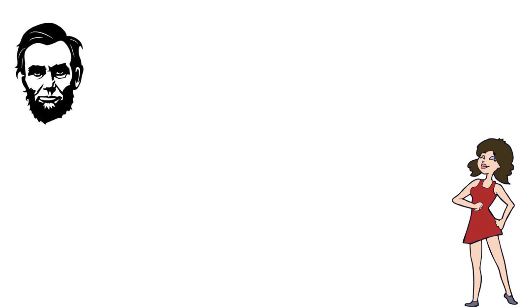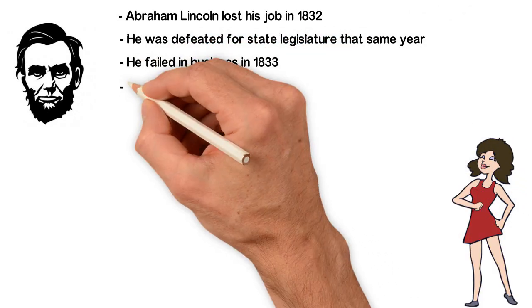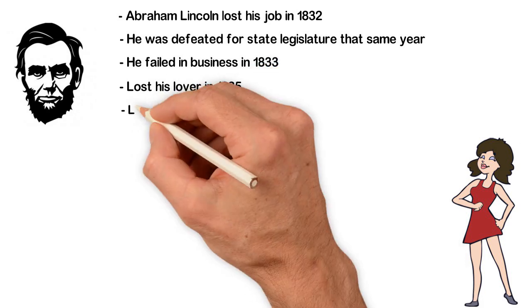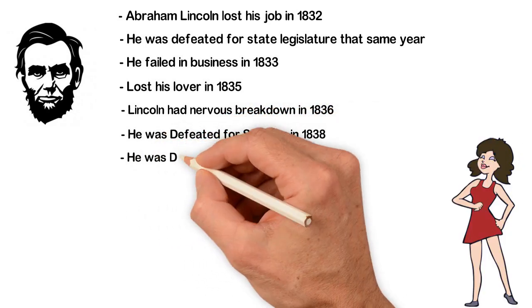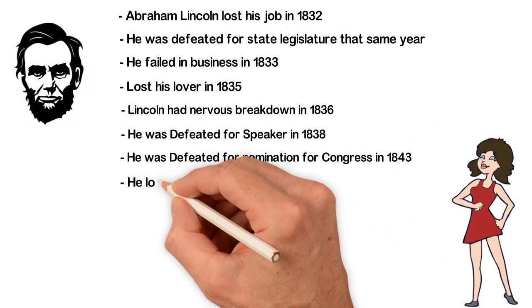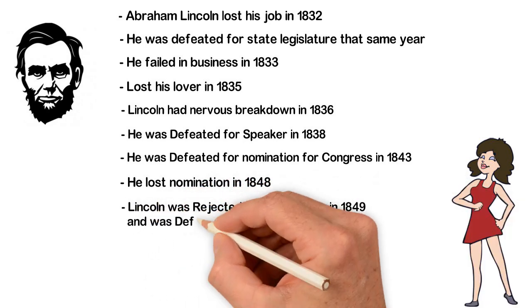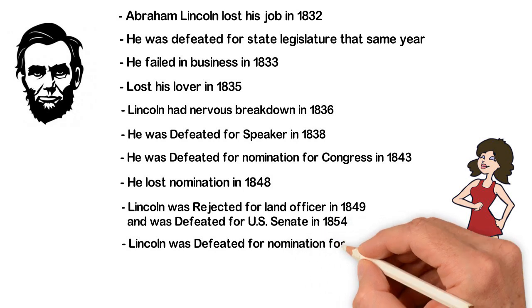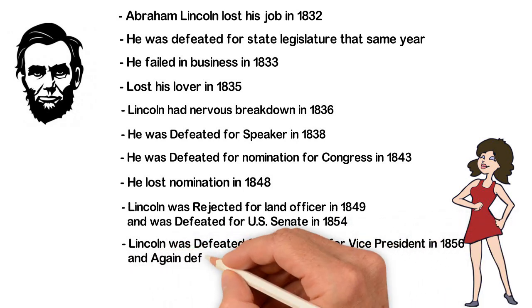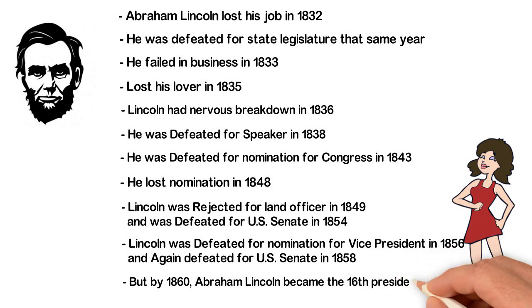Let's use Abraham Lincoln as an example here. He lost his job in 1832 and was defeated for state legislature that same year. He failed in business in 1833, lost his lover in 1835. Lincoln had a nervous breakdown in 1836 and was defeated for speaker in 1838. He was defeated for nomination for Congress in 1843 and lost nomination in 1848. Lincoln was rejected for land officer in 1849 and was defeated for U.S. Senate in 1854. Lincoln was defeated for nomination for vice president in 1856 and again defeated for U.S. Senate in 1858. But by 1860, Abraham Lincoln became the 16th president of the United States.